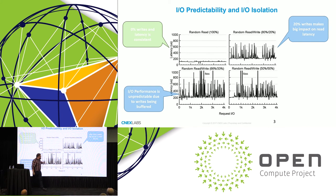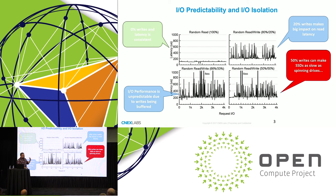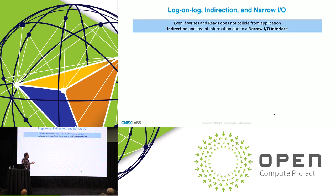It just continues going up as you add more and more writes — like 50% writes. At some point your SSD is as slow as a normal drive. So there's no way to provide IO predictability from an SSD, and there's no way to provide IO isolation — you cannot isolate reads from writes. That's one of the challenges. The second challenge is that when you look at the storage interface for SSDs, there's log-on-log, there's indirection, there's a narrow IO interface — meaning just read and write, with trim, but nothing more. So you don't really know what's going on within the SSD today.